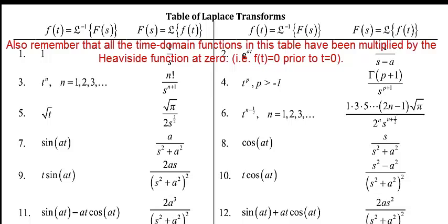Also remember that all of the time domain functions in this table have been multiplied by the Heaviside function at zero. In other words, f of t is zero prior to t equals zero.